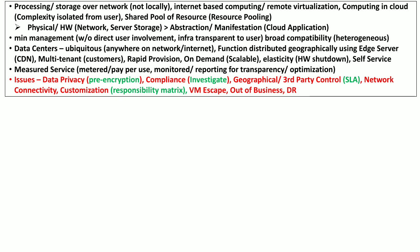Another aspect is limited customization available for the user. In contracts, the user organization may define responsibility metrics, dividing responsibilities between the user organization and the cloud service provider. Another concern is virtual machine escape, or VM escape, because cloud is an advanced form of virtualization — any virtual machine, if it gets compromised, may lead to the compromise of other machines. Another concern is that the cloud service provider may go out of business. And another concept regards the disaster recovery mechanisms employed by the cloud service provider.